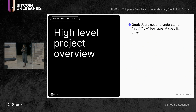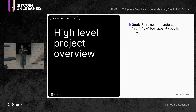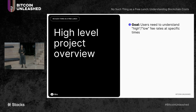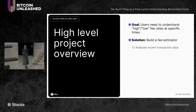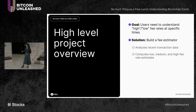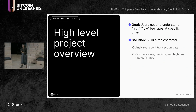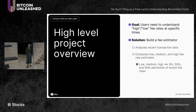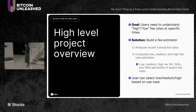Now let's talk about the fee estimation endpoint. Users need to understand what a high or low fee rate is at a specific time in order to send a competitive and informed transaction fee. The solution is to build a fee estimator. What the fee estimator does is analyze recent transaction data and, based on what users have paid recently per unit of transaction size, the node computes a low, medium, and high fee rate estimate. These correspond to the 5th, 50th, and 95th percentile of recent fee rates paid.